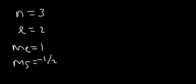For example, if N is three, L is two, ML is one, and MS is negative one half — what electron are we talking about? We know we're in the third energy level. When L is zero it's S, when L is one it's P, when L is two it's D. So we're in the three D sublevel.